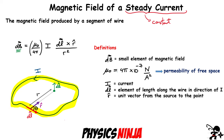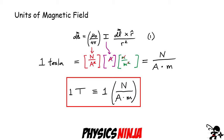In the denominator there's an r-squared term — reminiscent of Newton's law of gravitation and Coulomb's law in electrostatics. It's simply the distance squared from the element to the point of observation. Before applying it to problems, let's do a quick dimensional analysis. The bracket term mu zero over four pi has units of newtons per ampere squared.